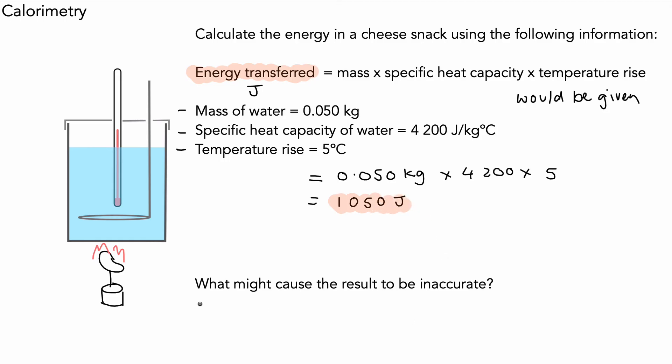What might cause a result to be inaccurate here? Well, if you look at the diagram, there's no insulation. That might cause inaccurate results. And if that stirrer was not used, that might lead to an inaccurate result as well. The top part would probably be worth about two marks using the equation and getting the right answer. This one is likely worth one mark.